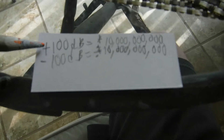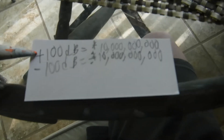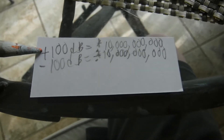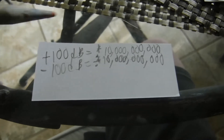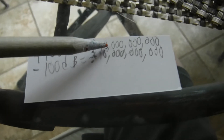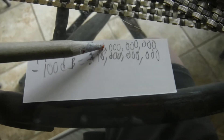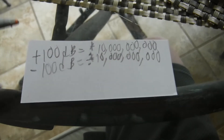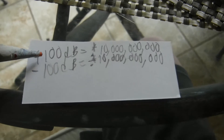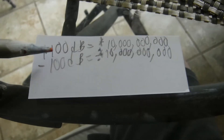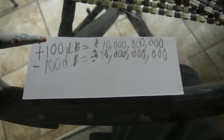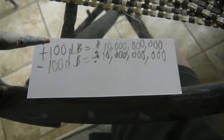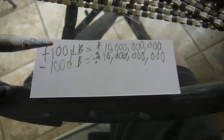Now let's get big. Adding 100 decibels increases the volume by 10 billion times — that's 10 zeros. If we add zeros to the number of decibels, that is double exponential.